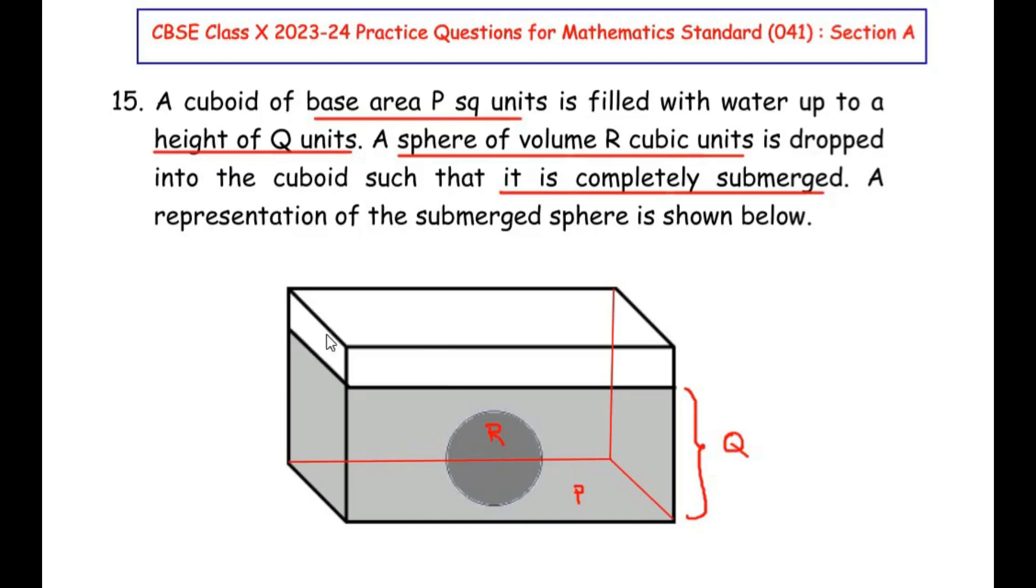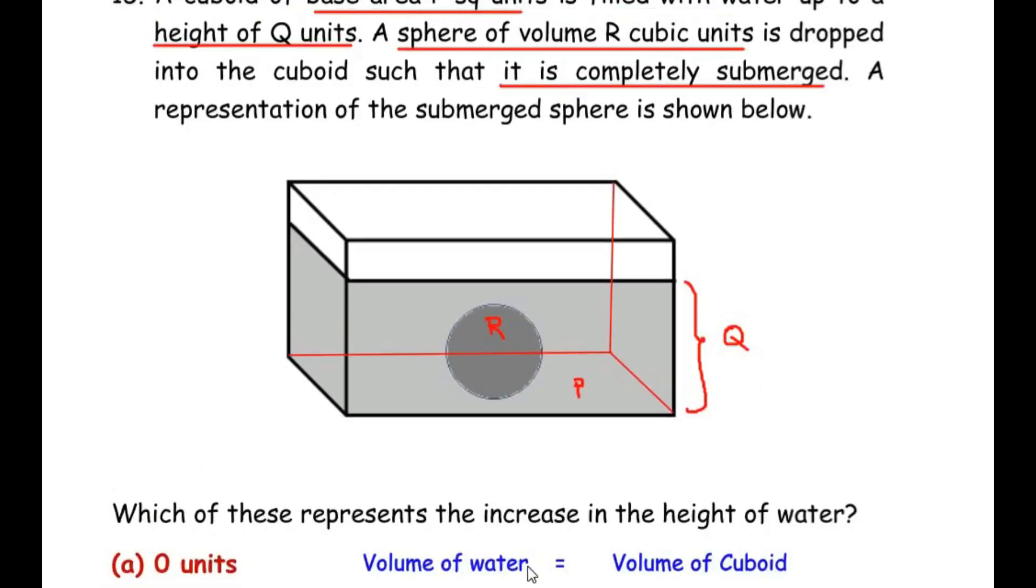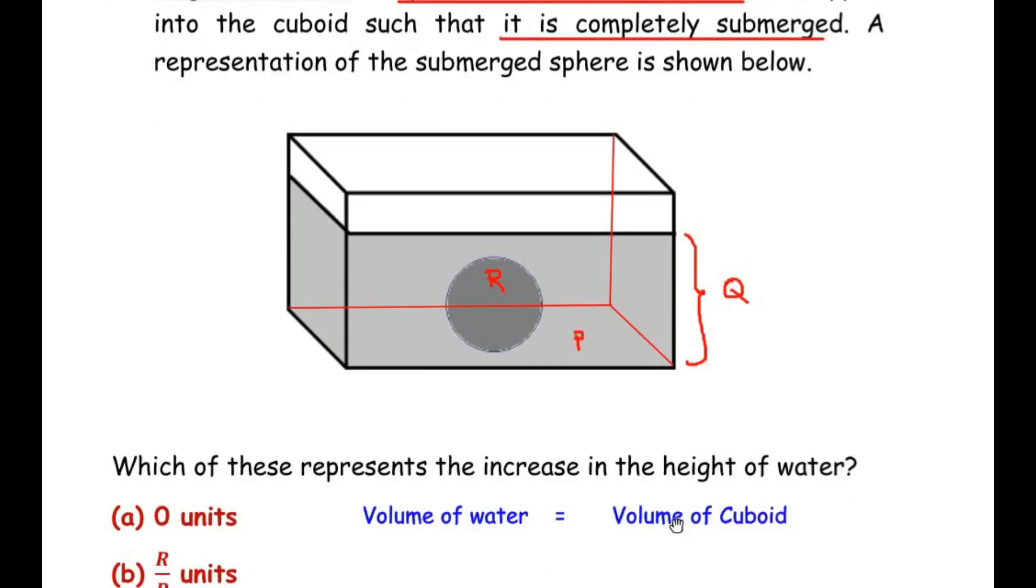And here our container is the cuboid. So we can write volume of water is equal to volume of cuboid. So let me write over here. So volume of the water is equal to volume of cuboid. And the volume of the cuboid is given as base area times height of the cuboid.